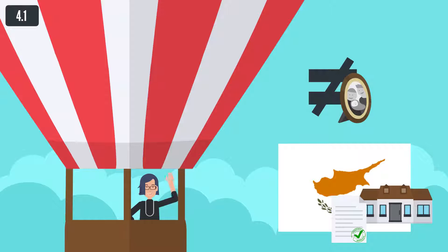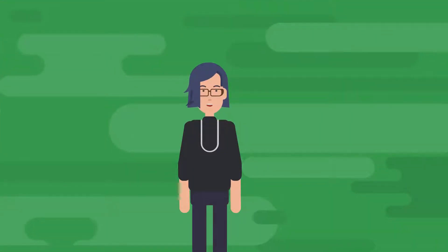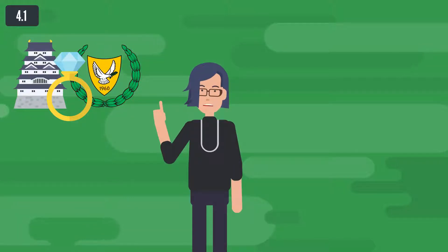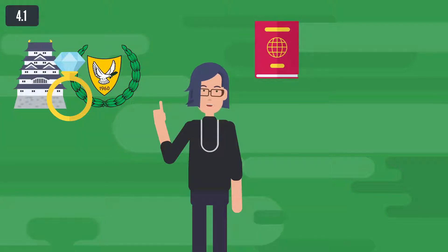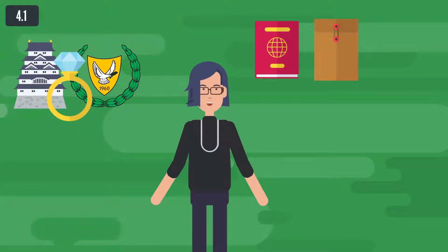A. Family reunification of family members of an EU citizen who are also citizens of a member state — registration certificate. For the issue of a registration certificate to family members of a union citizen who are also citizens of a member state, the following documents must be submitted: A. Valid passport or identity card and copies of the same. B. A document attesting to the existence of a family relationship.